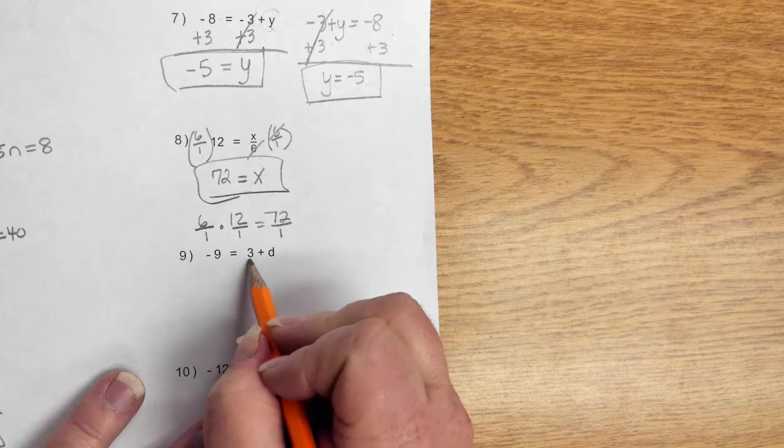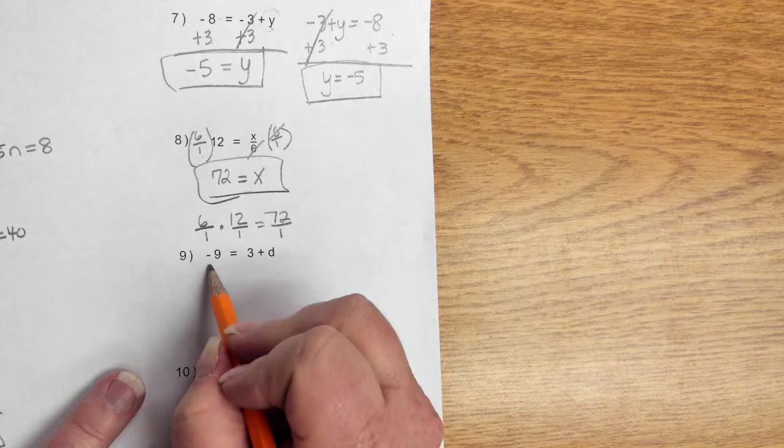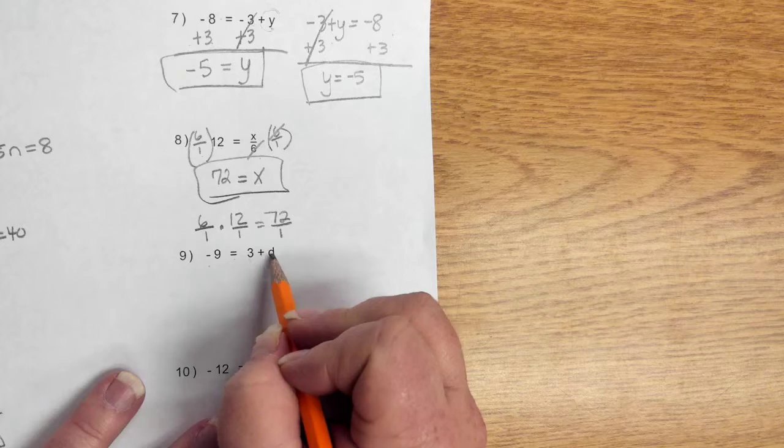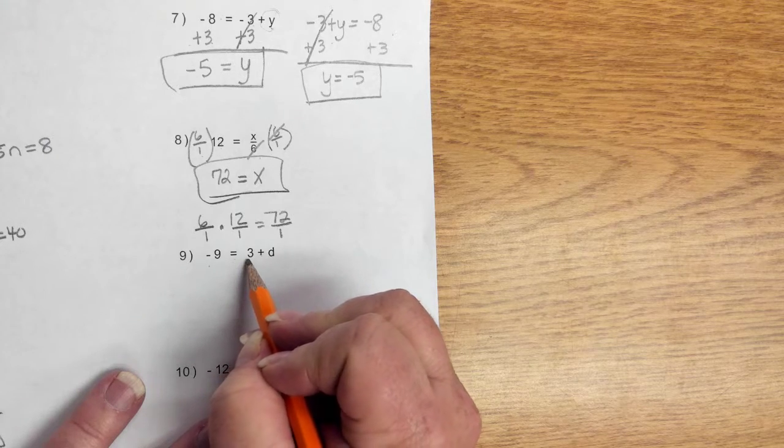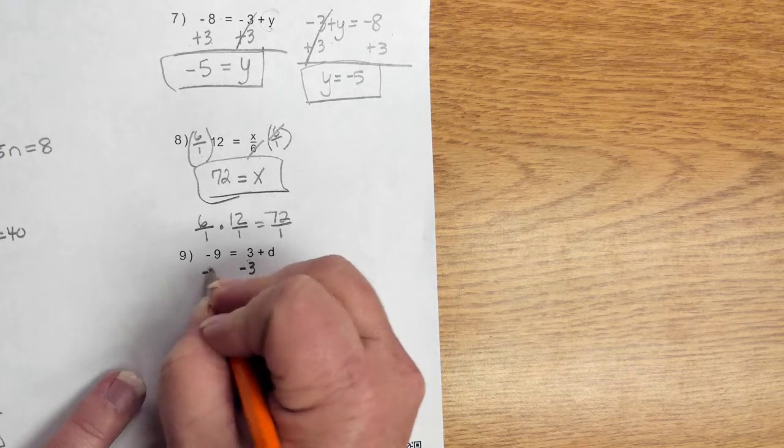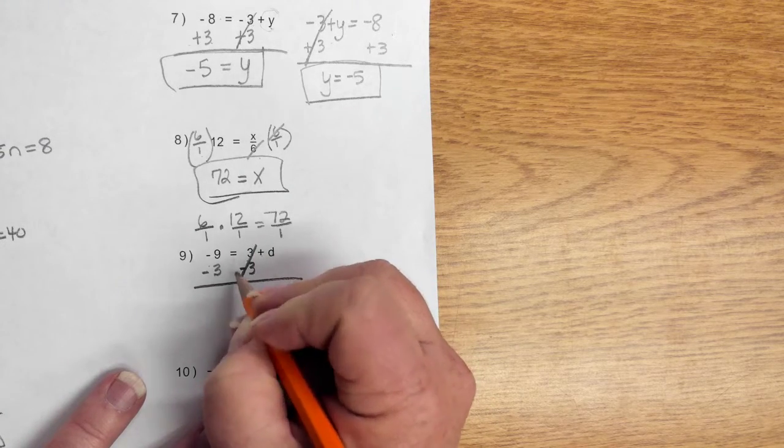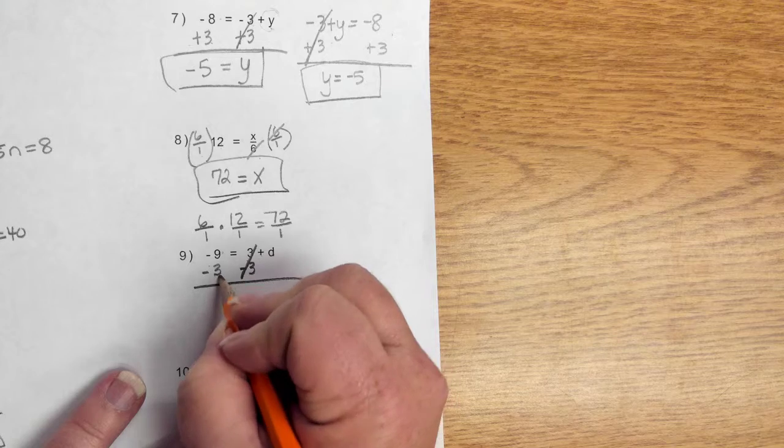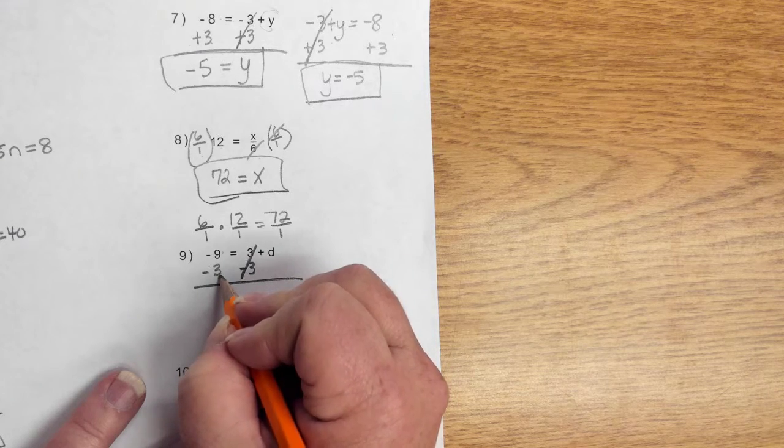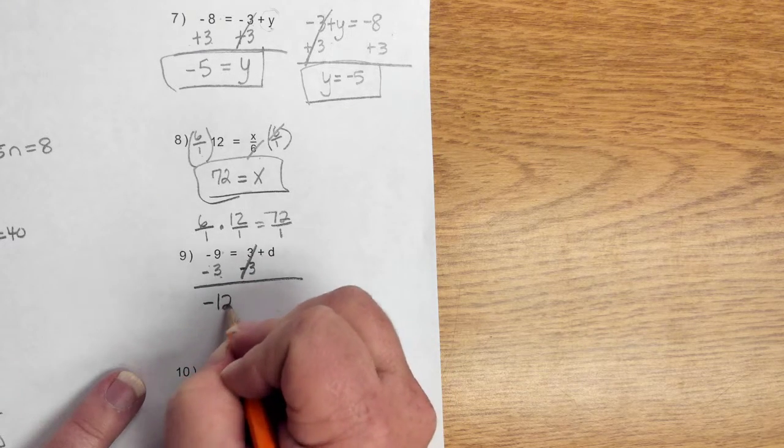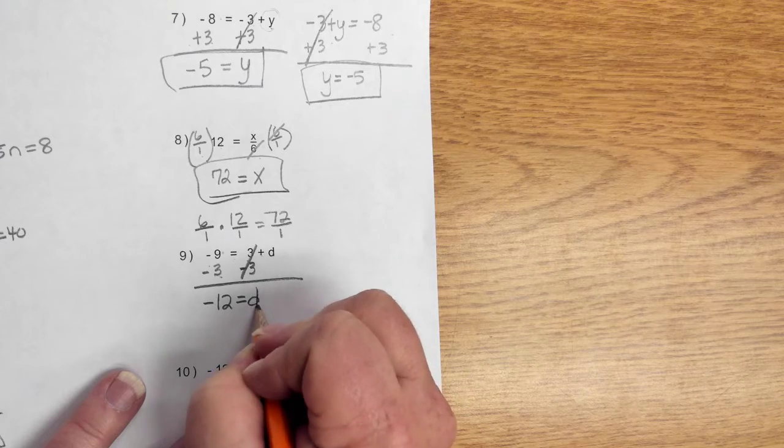We have negative 9 is equal to 3 plus D. Well, this is positive. We don't write it here, but it is. So, we're going to subtract 3 from both sides. Those cancel out. Negative 9 combined with negative 3 gives you negative 12 is equal to D. Done.